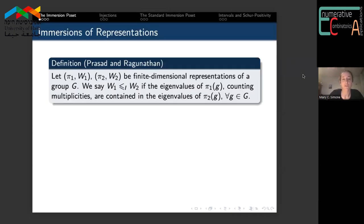Suppose we have two finite dimensional representations of a group. We say that W1 is immersed in W2 if the eigenvalues of π1(g) are contained in the eigenvalues of π2(g), counting multiplicities, and that this holds for all group elements g.